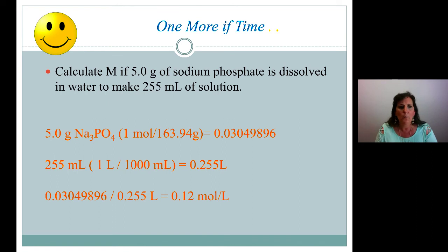Now we've got our moles. We've got our liters. So 0.03049896 moles divided by 0.255 liters. This is the final answer. So we have to round to the correct number of sig figs, which is 2 because of the 5.0 grams has two sig figs. We go at the least. So 0.12 moles per liter is the final answer.